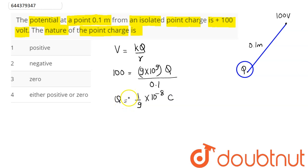So this is plus since the potential is plus. So charge comes as plus. Hence we can say this isolated point charge is of positive nature.